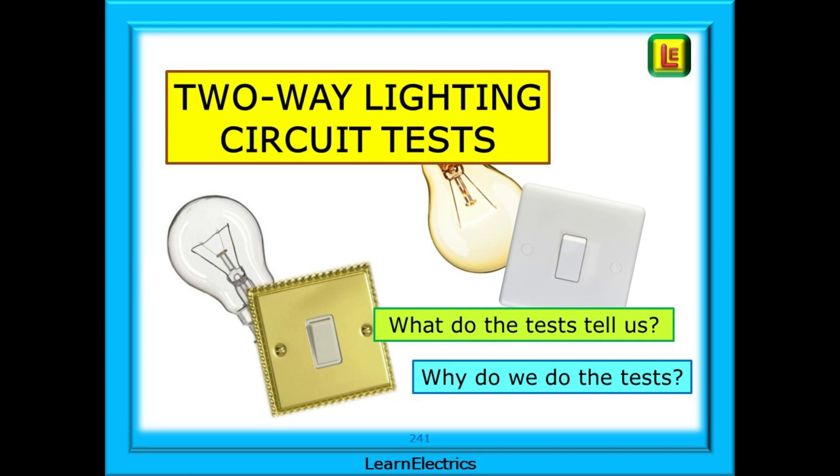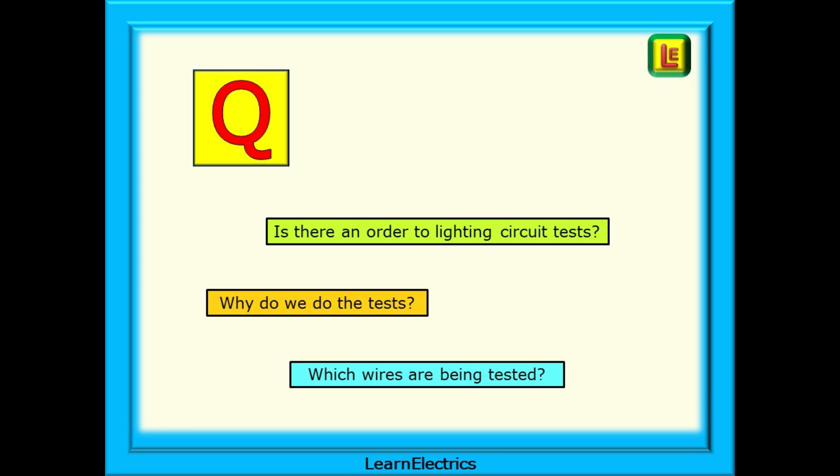In this LearnElectrics video we will look at the two-way lighting circuit tests that we must make. The video is about why we do the tests a certain way. We've often been asked why there is a certain order to the testing and why we do those particular tests, and the frequent question is about which wires, which conductors, are actually being tested at any one time. Two-way lighting tests are easy to do, we just need to be methodical.